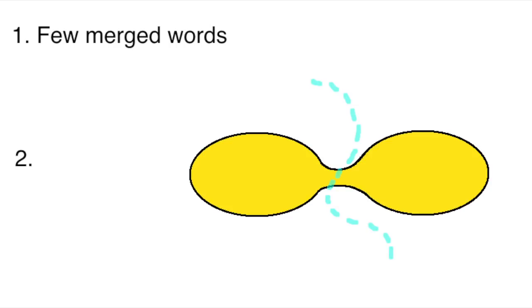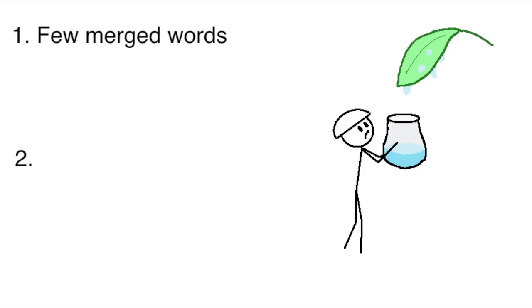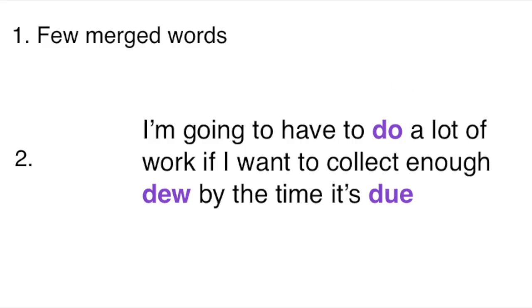Two, the words that do merge together, you can often still tell apart from context. When I say, I'm going to have to do a lot of work if I want to collect enough dew by the time it's due, you can still tell exactly what I mean even though these three words were all pronounced the same.